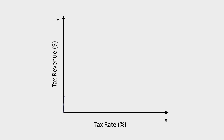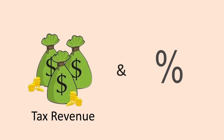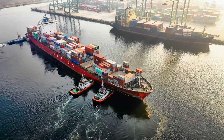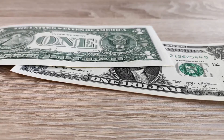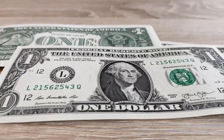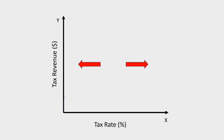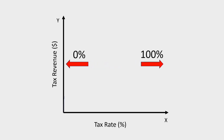The Laffer curve is a very simplistic and powerful tool that can help demonstrate how tax is related to revenue, which can help government decide an optimal tax rate at which an economy can prosper and at the same time its own revenues are at maximum. This optimal rate is somewhere between 0% to 100%.